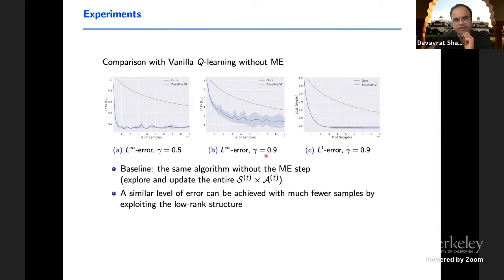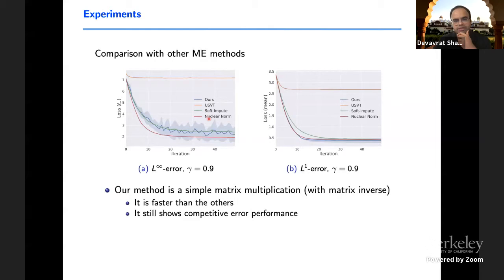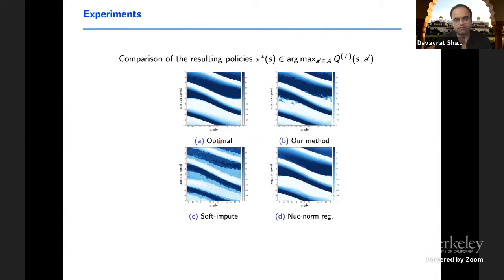The takeaway is that while our results were true for small gamma, in practice, they work for gamma getting close to one, which seemed to suggest that maybe our analysis is weaker rather than the method itself. This is showing the same thing, but instead of using the method that we proposed, other matrix estimation methods. While these methods don't have guarantees, at least provably known guarantees, they were almost as good as our approach.